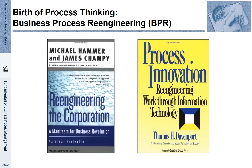Why did things change around the end of the 1980s? The reasons are associated with new innovations around information technology. Around that time, the personal computer was increasingly used. Windowing systems made it easy for end users to navigate such computers. Computer networks were increasingly used as well, and database technology became more mature. All these different technologies provided substantial opportunities for organizing processes differently — away from paper, towards an IT-based coordination.